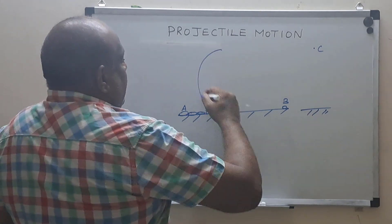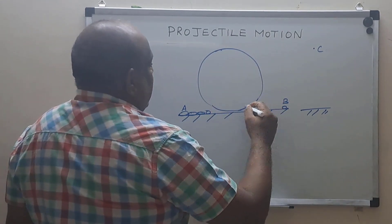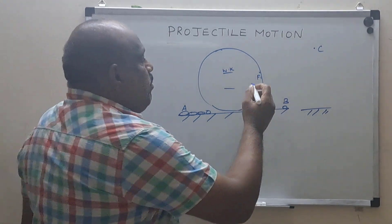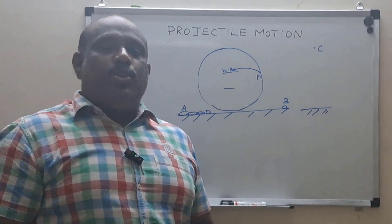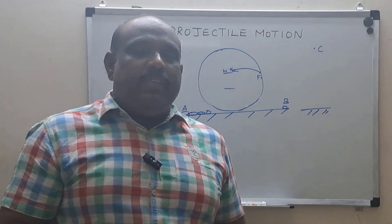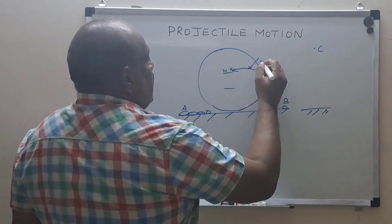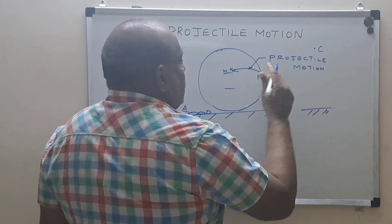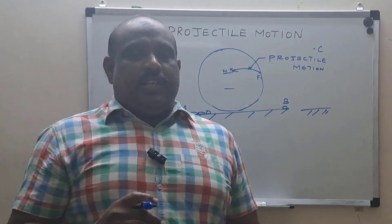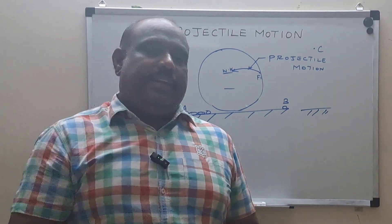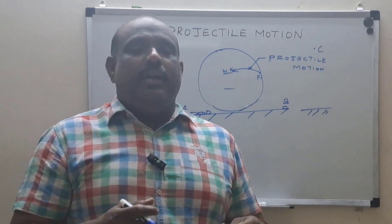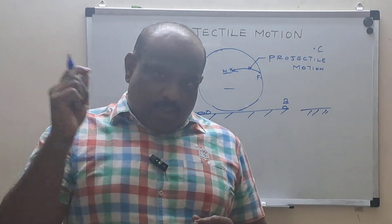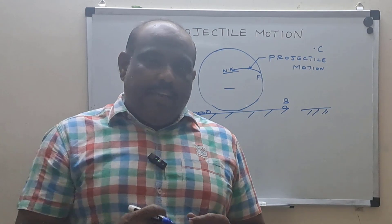So what is projectile motion? I have a cricket ground. The wicket keeper is at one end and the fielder is here. The ball is thrown by the fielder to the wicket keeper through the air. This motion — the ball going through the air and being received by the wicket keeper — is called projectile motion. The path traversed by the cricket ball is called projectile motion because the fielder gives an initial velocity, and the path is determined by the attraction of gravity.